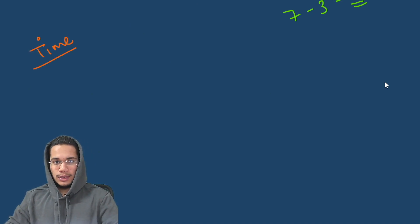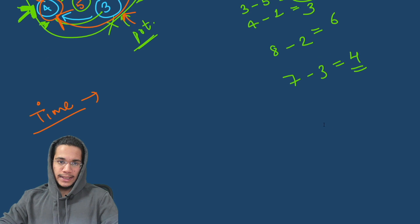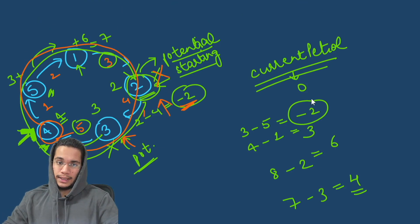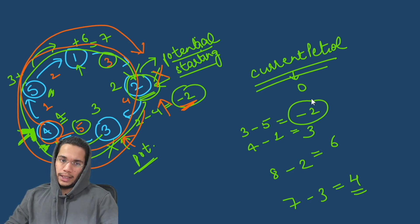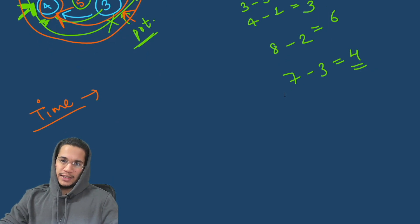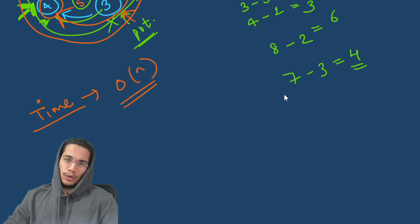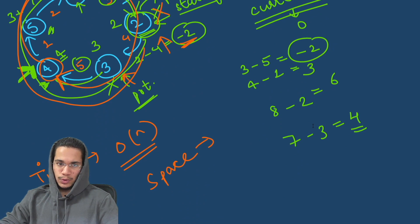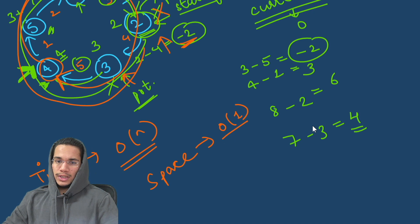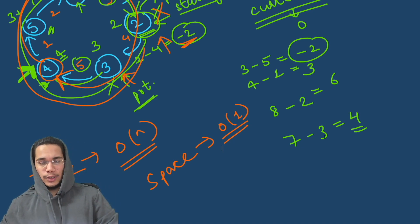For the time complexity of this algorithm: we start from one point and iterate over all gas stations exactly once, so the time complexity is O(n) — linear. For space complexity, we are not using any auxiliary array or container, only two or three variables, so space complexity is O(1) — constant. This is a constant space and linear time solution, which is pretty optimal.